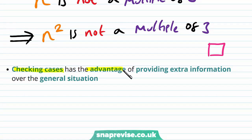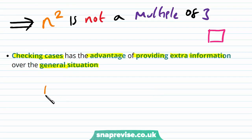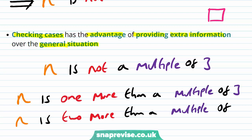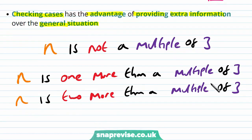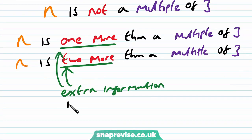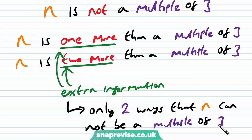Checking cases has the advantage of providing extra information over the general situation. We take the overall statement that n is not a multiple of 3, and we split into two cases: n is one more than a multiple of 3, or n is two more than a multiple of 3. These give us extra information in each case, which is useful since there are only finitely many ways that n could not be a multiple of 3.